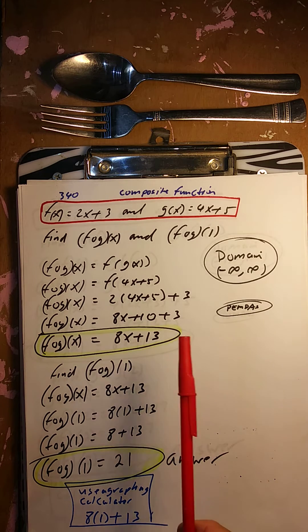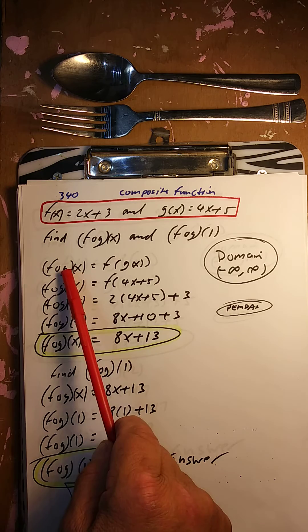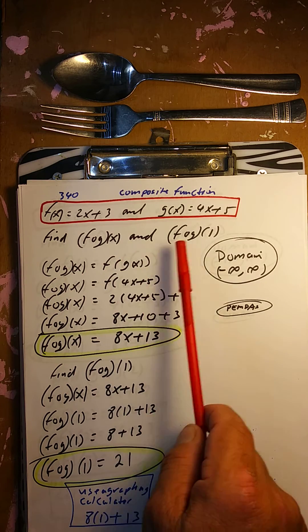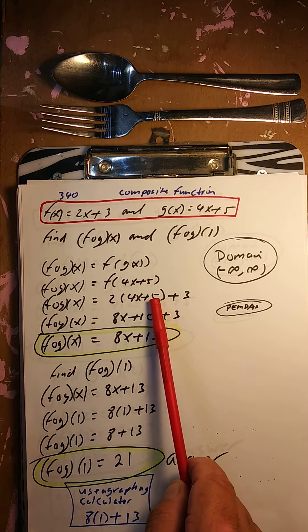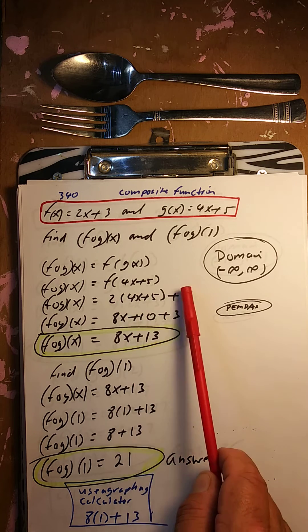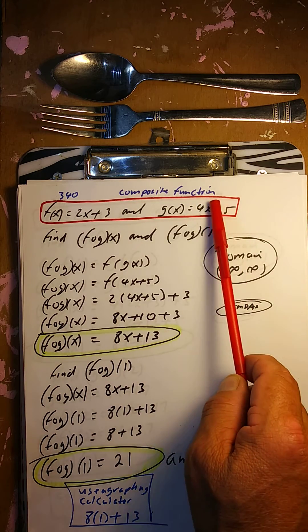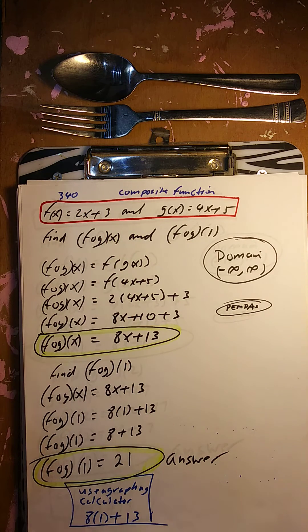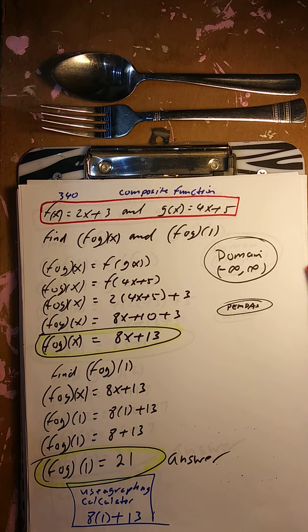Composite function: f circle g of x, and find f circle g of 1. f circle g of x is defined as f of g of x. g of x is 4x plus 5, so I take that and put it inside f. So 2 times the quantity 4x plus 5, plus 3. That gives 8x plus 10 plus 3, which is 8x plus 13. So f circle g of x is 8x plus 13. For f circle g of 1: 8 times 1 plus 13 is 21. Domain is all real numbers.